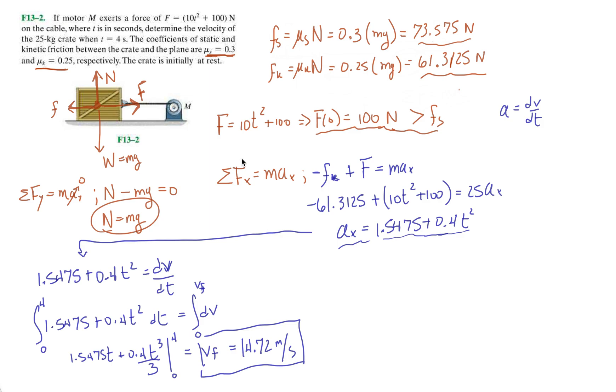Remember, like I mentioned, look for keywords, key things that they throw out there. When a problem gives you mu s and mu k, they'll most likely want you to say, evaluate it at the point s. So like, is it moving? Is it at rest? And then use the mu k if it's actually moving.